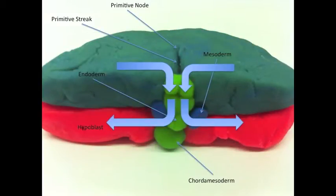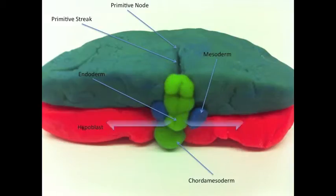Individual epiblast cells from the surface layer move medially over the blastodisc towards the primitive groove. As they involute into the primitive streak through epithelial to mesenchymal transition, the epiblast cells lose their cell adhesion causing a change in shape from columnar to bottle cell to mesenchymal cell.